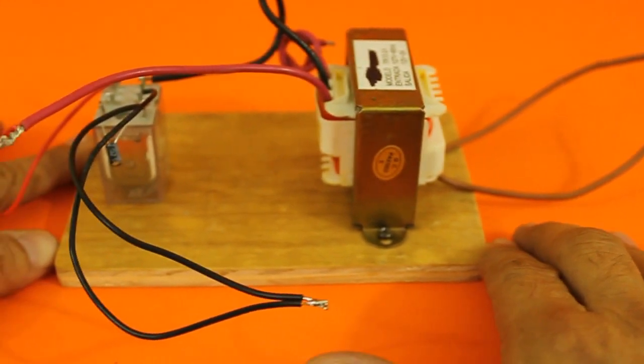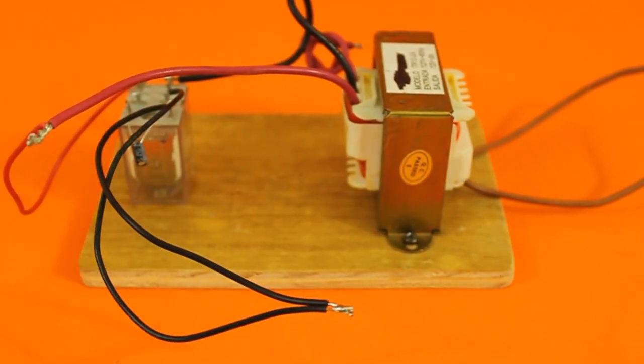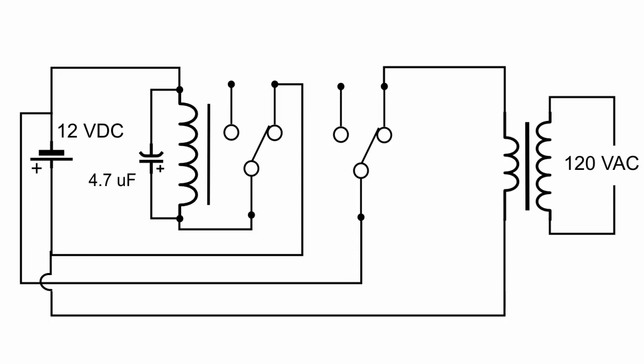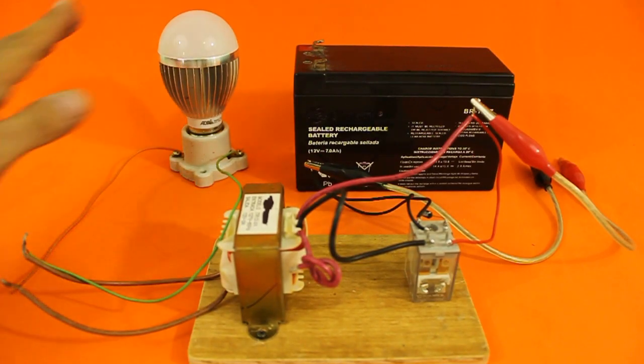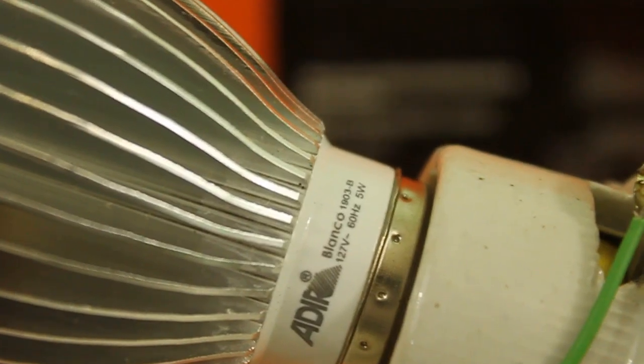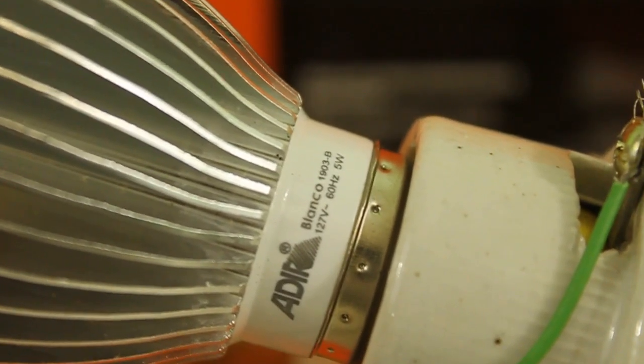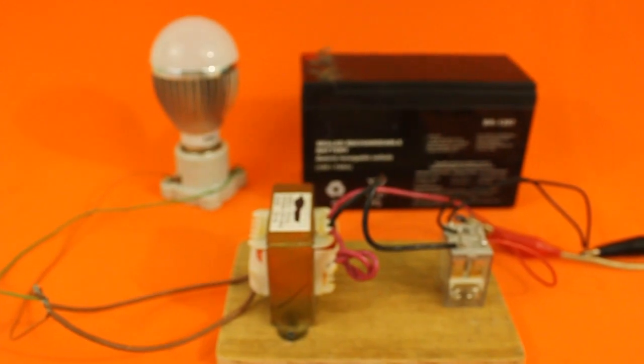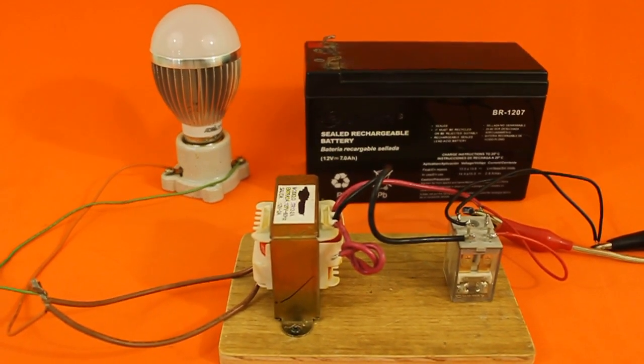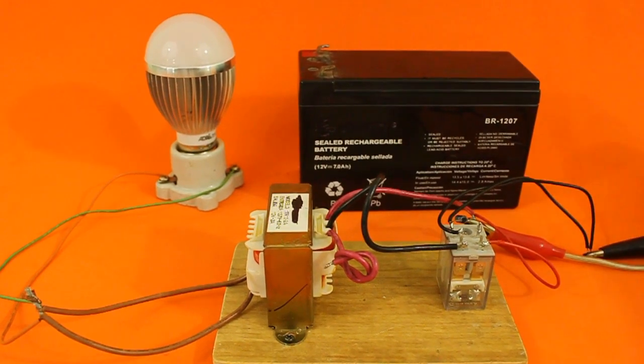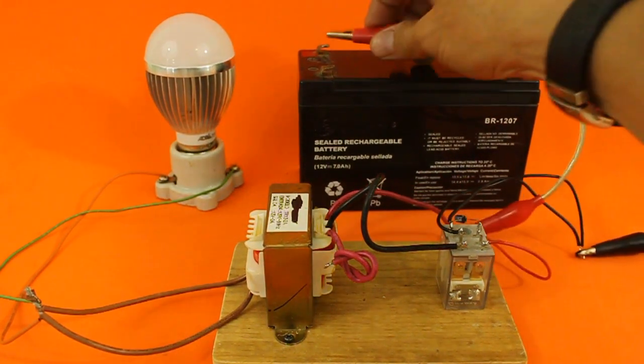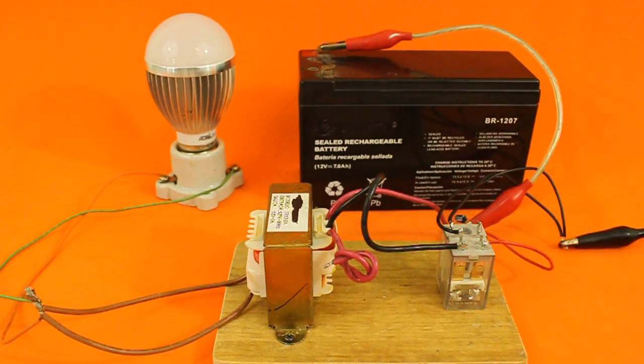So let's see the inverter working. Let's try first with this LED lamp. The lamp works at 120 volts as you can see. So let's now make the connections, positive terminal and negative.